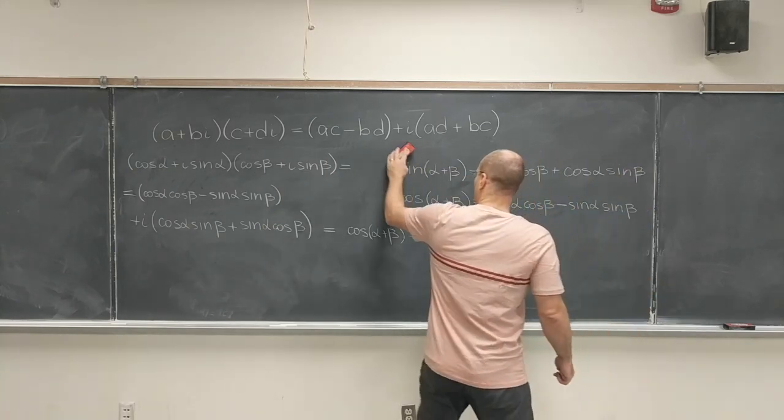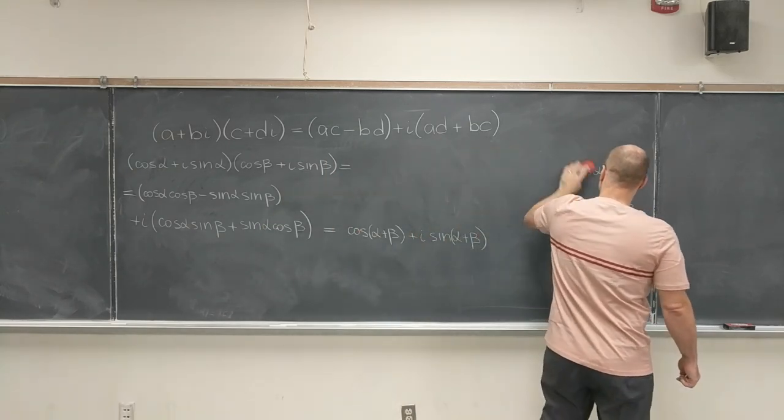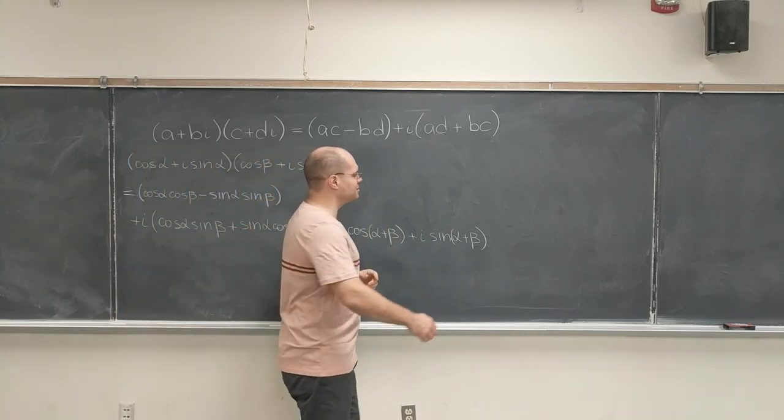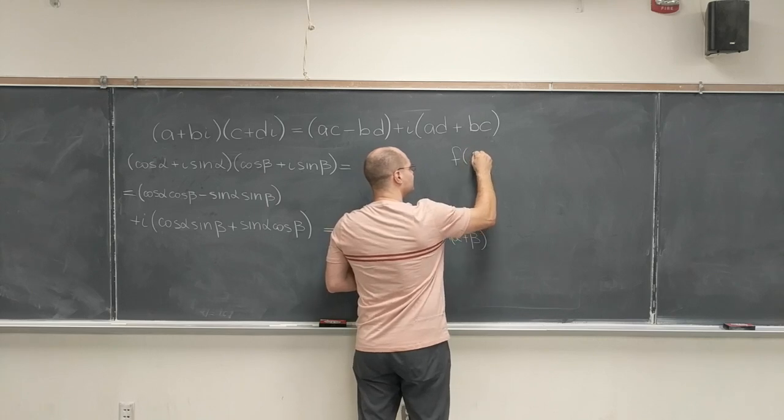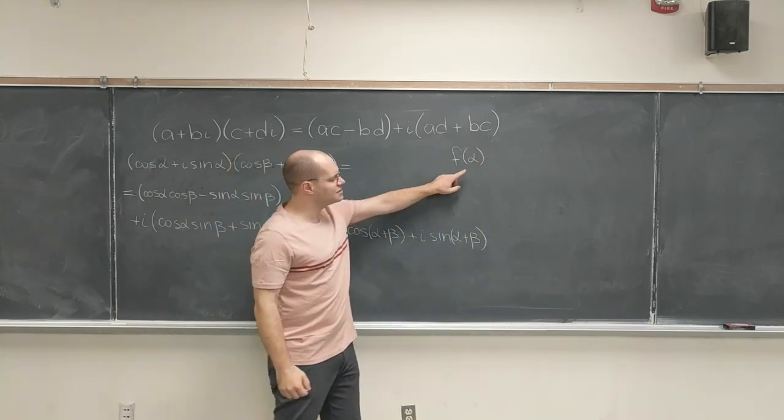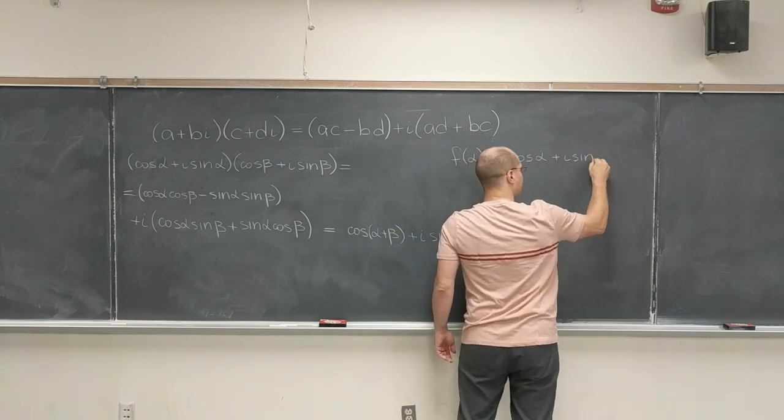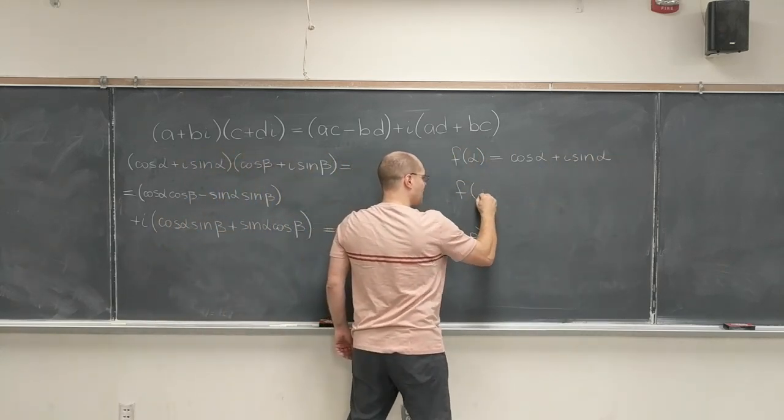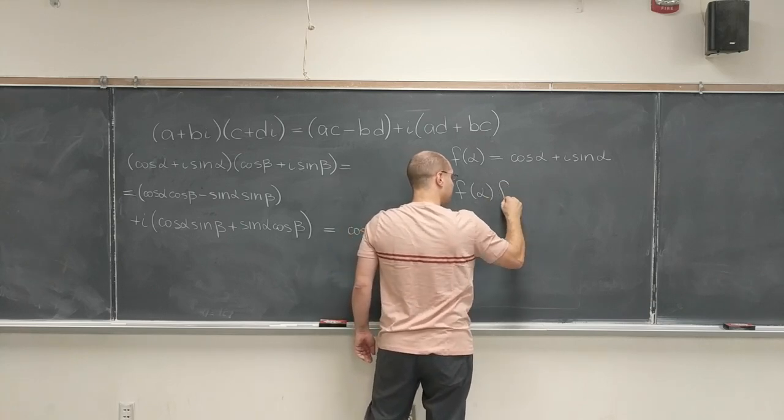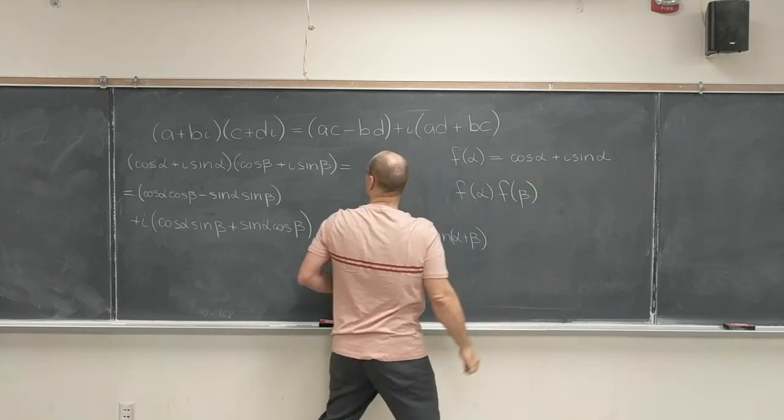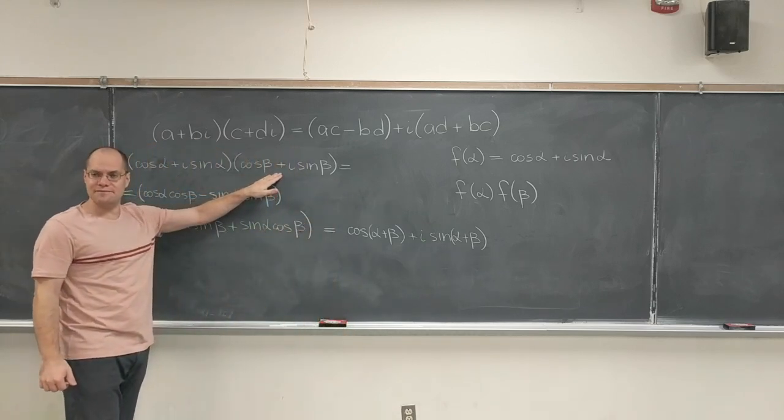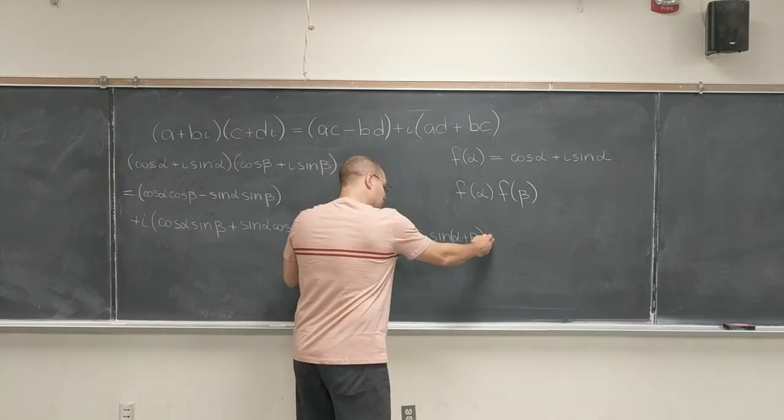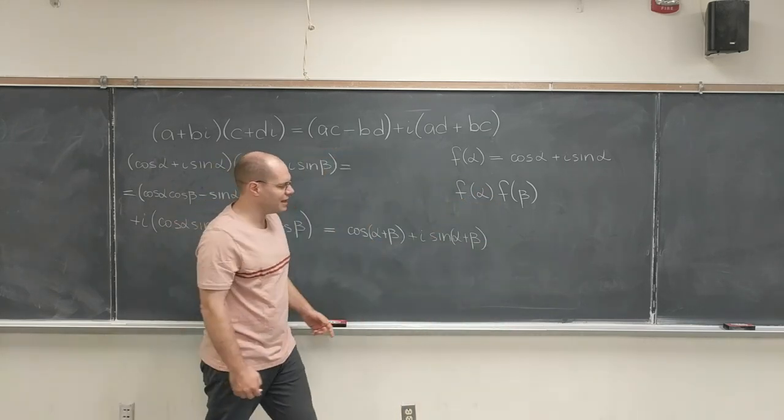So, we can summarize the facts in the following way, and I just want to set you up for the leap to Euler's formula, because it's still a leap. So, if you consider this complex valued function of a single parameter, then we have just proven this identity, f of alpha times f of beta, because these two numbers are two numbers of the exact same form. So, one is f of alpha, the other one is f of beta, and you end up with a third number of the exact same form, with a parameter alpha plus beta.